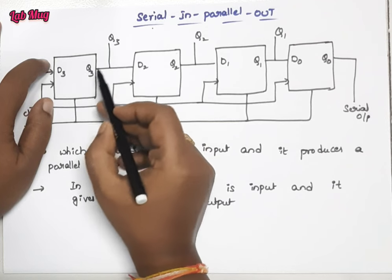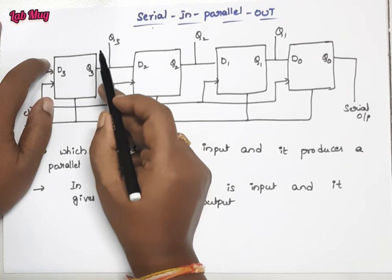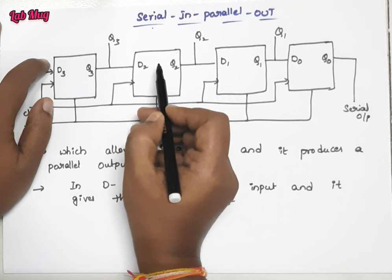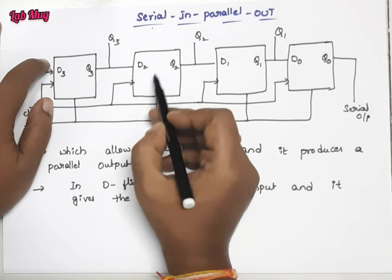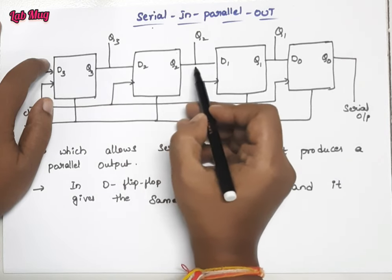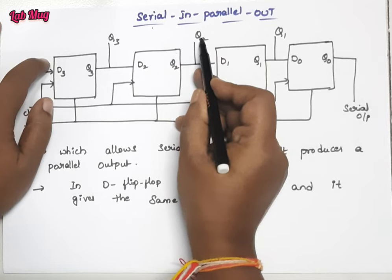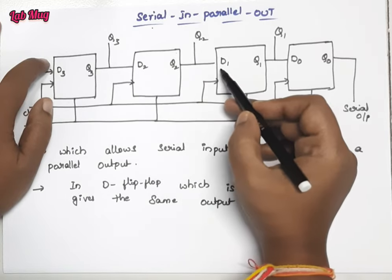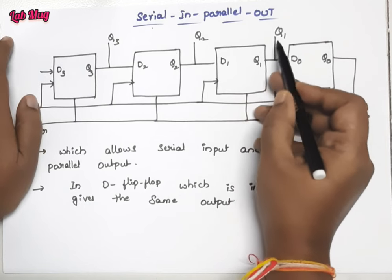So Q3 first we send as output and the input to D2. Again D2 value processing, Q2 output goes outside as output and it is going to D1.